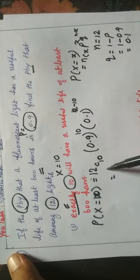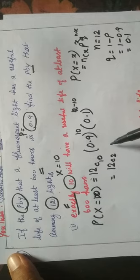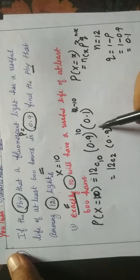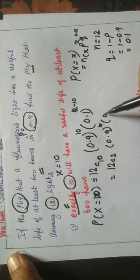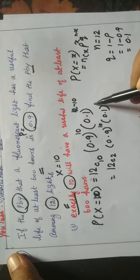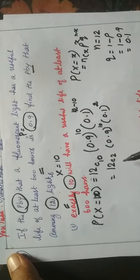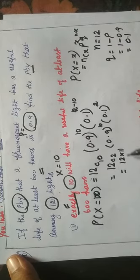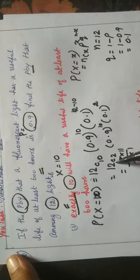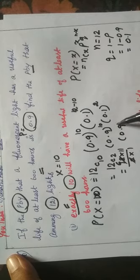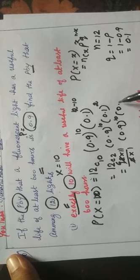So this equals 12C10, which is nothing but 12C2, because NCR equals NC(N minus R). Then we write 0.9^10 multiplied by 0.1^2, that is 0.1 whole squared.